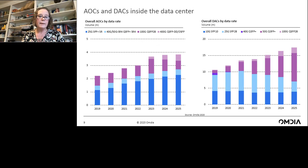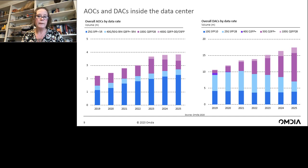For server connections — AOCs and DACs inside the data center — some AOCs will also be in the top-of-rack to leaf connections. There's still a lot of 25G and 10G for enterprise. The 25G is going to be focused mainly in China ICPs, who use 25G AOCs instead of modules for the server. Moving forward, 400G will really start to grow. For DACs, 10G to 100G, and the 25G is starting to decline.